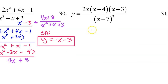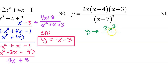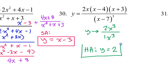For number 30, we need to investigate the degree of the numerator compared to that of the denominator. As x approaches infinity or negative infinity, only the leading term of each factor will matter. This is going to become 2x times x times x, so y approaches 2x to the third power over x to the third power. The degrees are equal, so there is a horizontal asymptote, and it will be y equals the ratio of the leading coefficients — that's 2 over 1, which is 2. So we have a horizontal asymptote y equals 2.